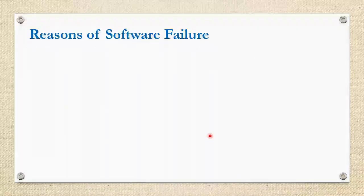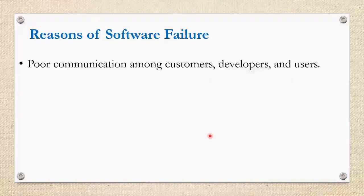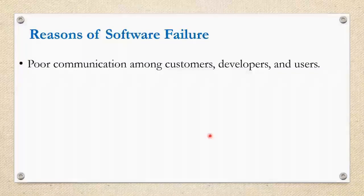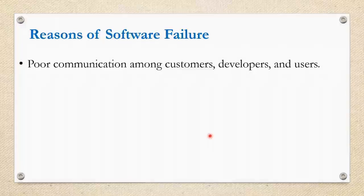Next, poor communication among customers, developers, and users. To find out the requirements, there must be proper communication between the customer, developers, and users. Unless they communicate well, some hidden requirements or some requirements will be missed. So unless they communicate, the requirements won't come up. Poor communication or miscommunication among customers, developers, and users can also cause software failure.